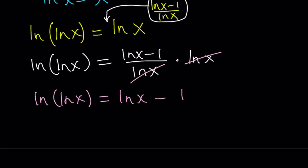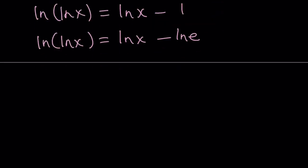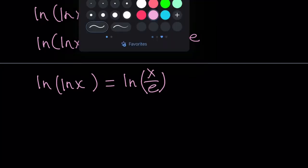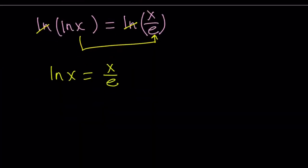Now how do we interpret ln(ln x) = ln x - 1? We can write the right side as ln x minus ln e — since ln e = 1 — and using the property log a minus log b equals log(a/b), that becomes ln(x over e). So we have ln(ln x) equals ln(x over e). With ln's on both sides we can cancel them, giving us ln x equals x over e.